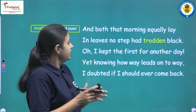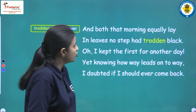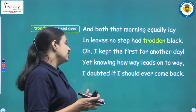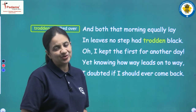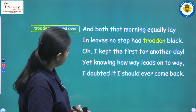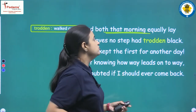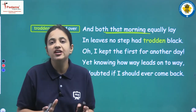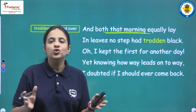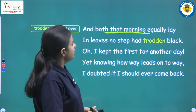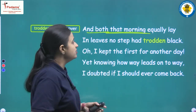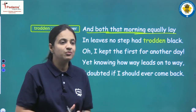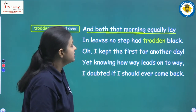The third stanza reads: 'And both that morning equally lay in leaves no step had trodden black. Oh, I kept the first for another day. Yet knowing how way leads on to way, I doubted if I should ever come back.' The morning refers to when the poet was in the forest facing two separate roads. Both roads lay equally before him.